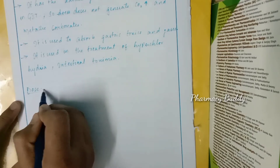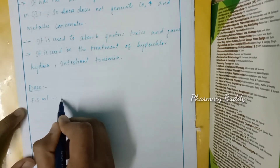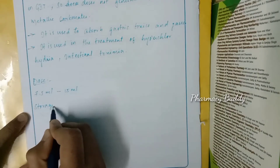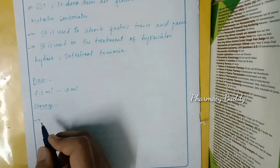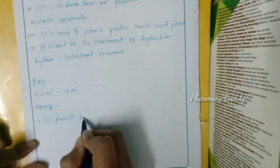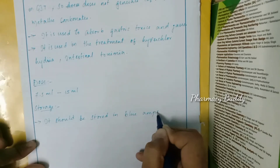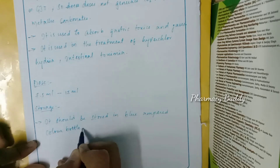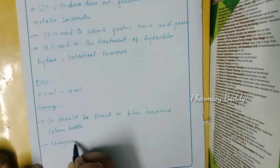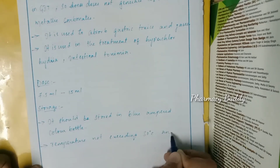Regarding dose, each person should be given 7.5 ml to 15 ml. For storage, it should be stored in an amber-colored bottle at a temperature not exceeding 30 degrees Celsius, and it should not be frozen.